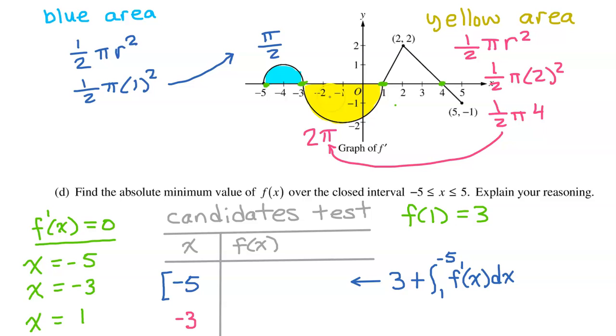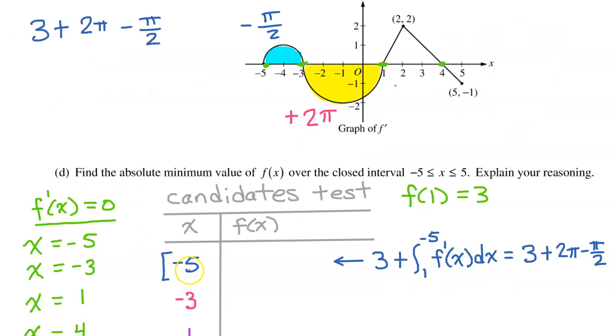Be careful, when we are integrating from left to right, areas above the x-axis are considered positive, and areas below the x-axis are considered negative. But in this case, we are integrating from 1 to negative 5, from right to left. So everything is reversed, and areas above the x-axis will be negative, and areas below the x-axis are now positive.